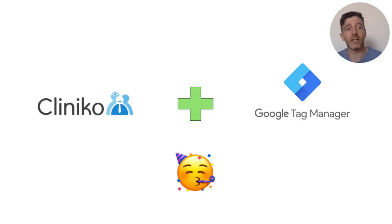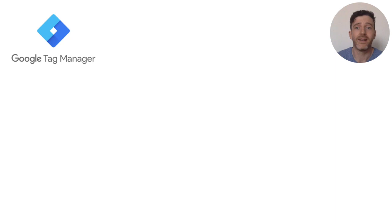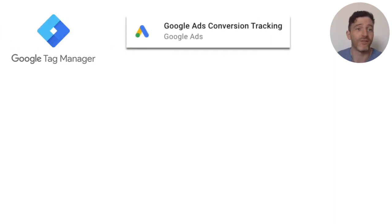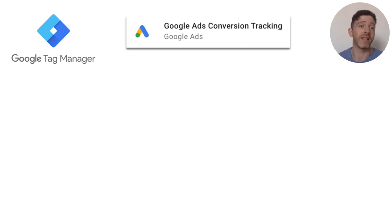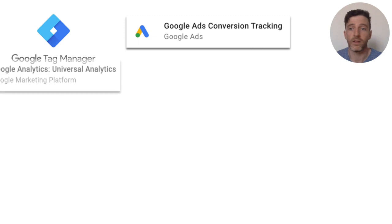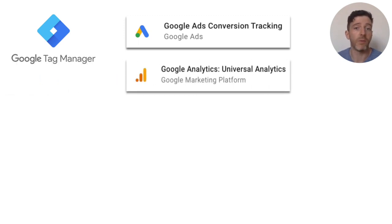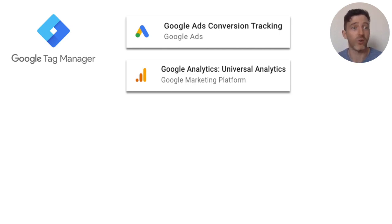Coming back to the Cliniko side of things, we've added support for a couple of different tags, starting with the Google Ads conversion tag. This tag is pretty intuitive — it'll allow you to track the source of your booking right back to the ad click, so you can track your bookings from the ad source to a confirmed booking. The Google Analytics tag will replace our existing integration with Google Analytics, and you can continue tracking your visitors and reporting on your goal conversions.